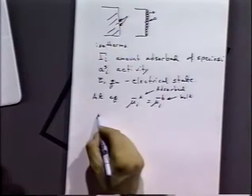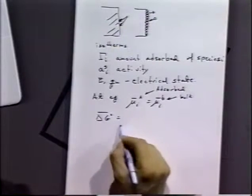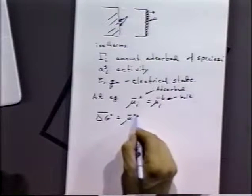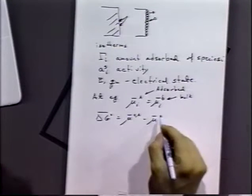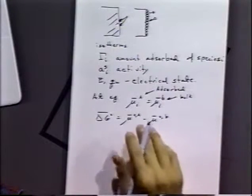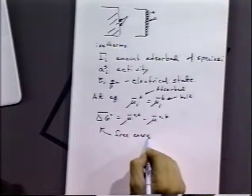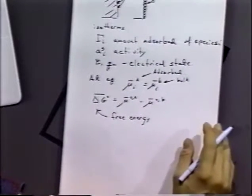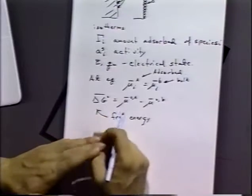Since that's true, we can define a free energy — an electrochemical free energy for that particular state — which is equal to the standard free energy of the adsorbed molecule minus the standard free energy of the bulk solution, i.e., the electrochemical potentials. This would be our free energy of adsorption. Just like any other free energy, if that free energy is less than zero, there's a tendency for molecules to be adsorbed on the surface; if it's greater than zero, molecules would not tend to be adsorbed.